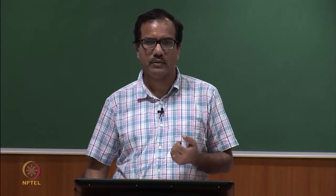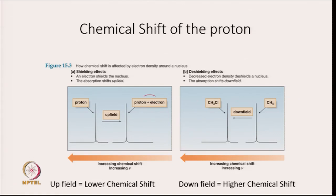Higher frequency is to the left in the NMR spectrum, towards higher chemical shifts. Deshielding shifts absorption downfield; protons near electronegative atoms are deshielded and absorb downfield, meaning higher chemical shift. If electrons shield a proton, the peak shifts upfield. If we decrease electron density near a nucleus, we deshield it and absorption shifts downfield — higher chemical shift. Upfield means lower chemical shift.